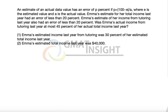An estimate of an actual data value has an error of P% where P is defined by the given formula. The estimated value is E and the actual value is A. This is the percentage error formula.